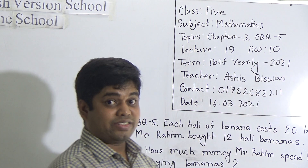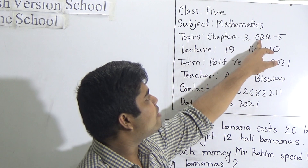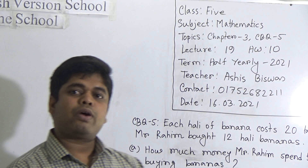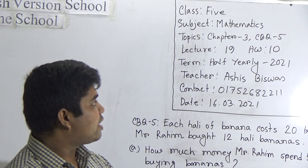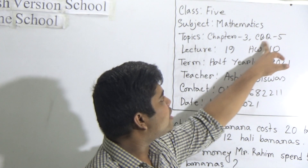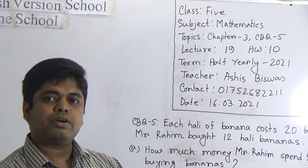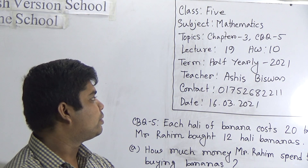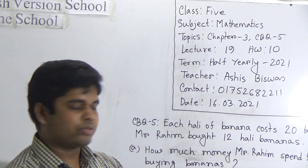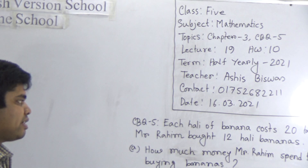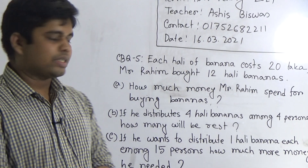Today's SW number will be 10. Our today's topic is Chapter 3, CBQ 5. Today is our last class of this chapter. Dear students, today CBQ 5 will be your CW and it is also your SW. So let us start to solve this math. First, we read the question.